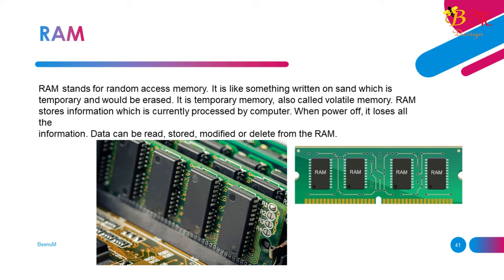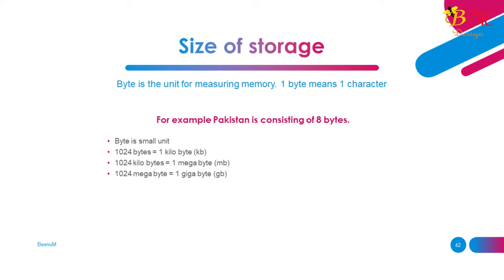RAM stands for random access memory. It is like something written on sand — temporary and would be erased. It is also called volatile memory. RAM stores information which is currently being processed by the computer. When power is off, it loses all information. Data can be read, stored, modified, or deleted from RAM. Size of storage: 1024 bytes equals 1 kilobyte (KB); 1024 kilobytes equals 1 megabyte (MB); 1024 megabytes equals 1 gigabyte (GB).